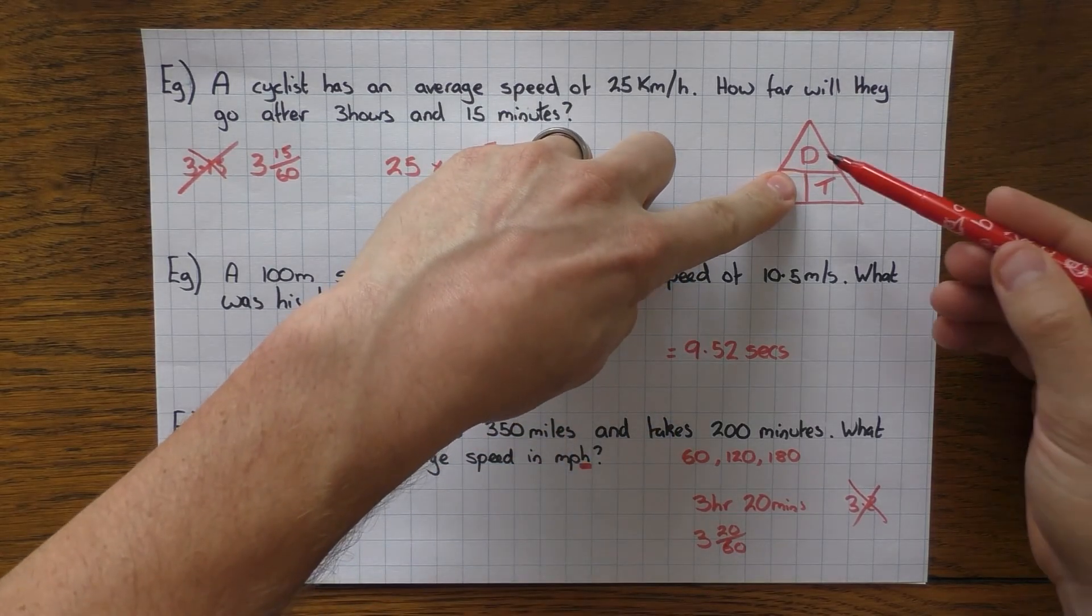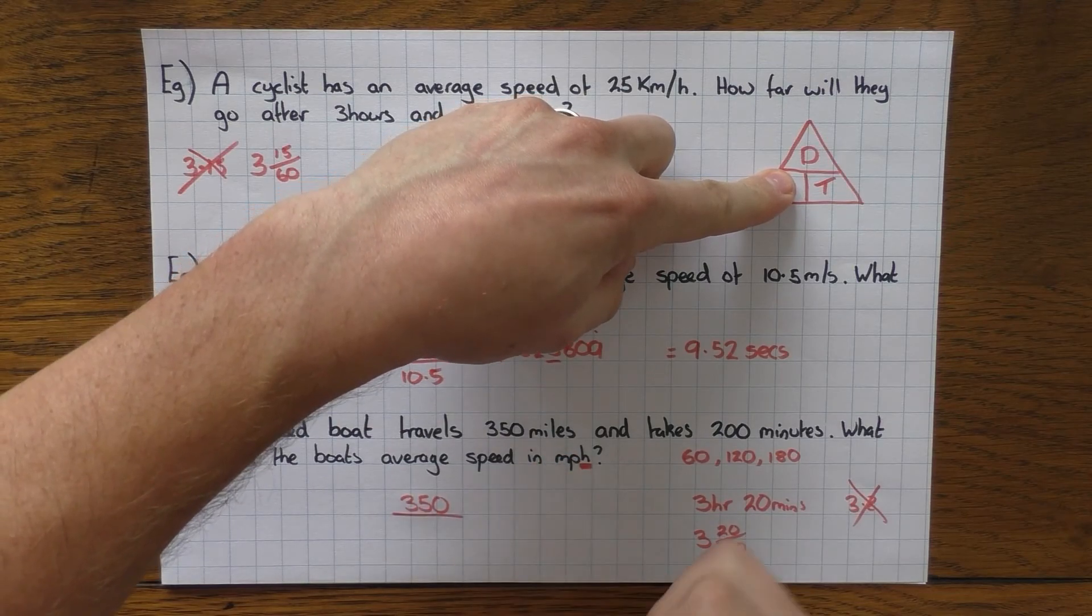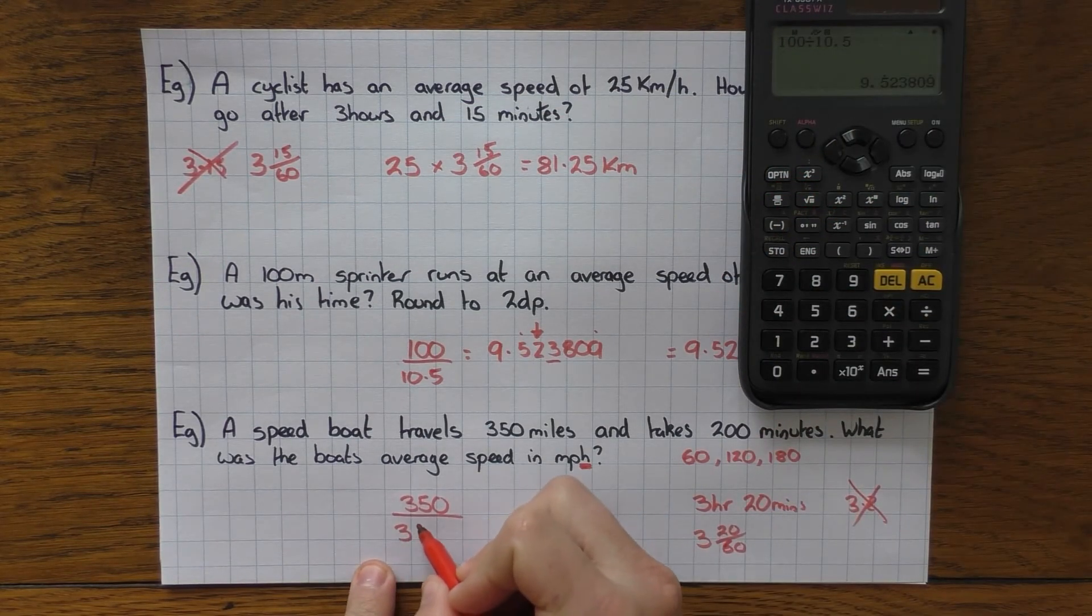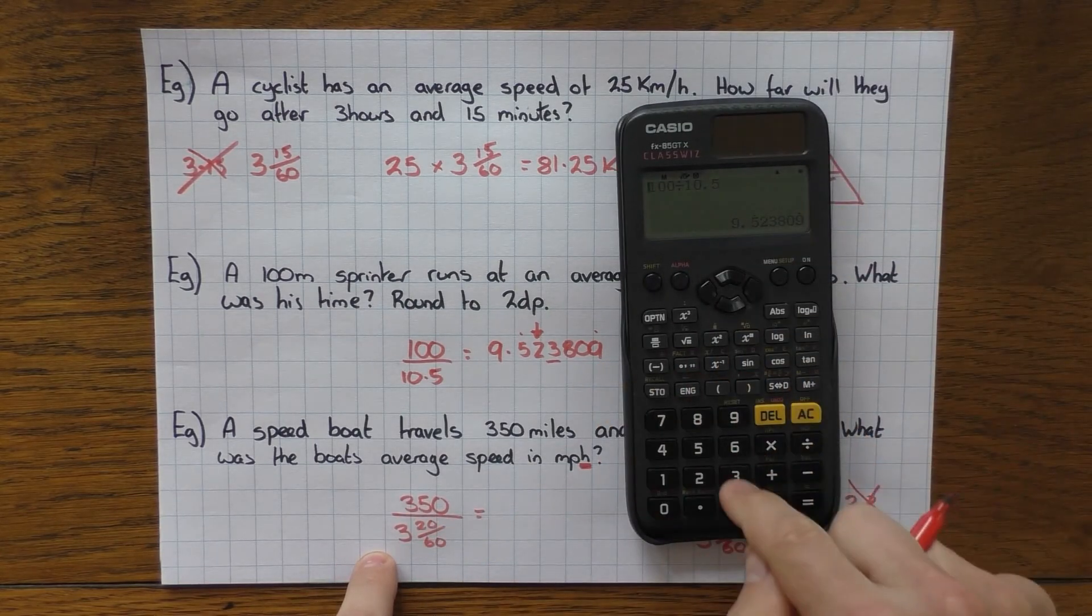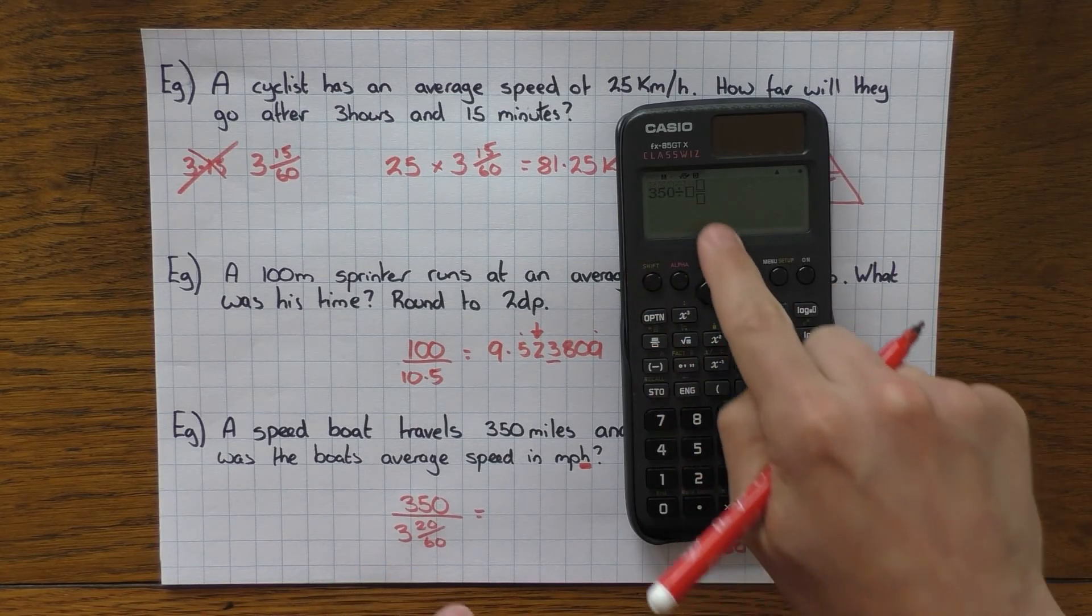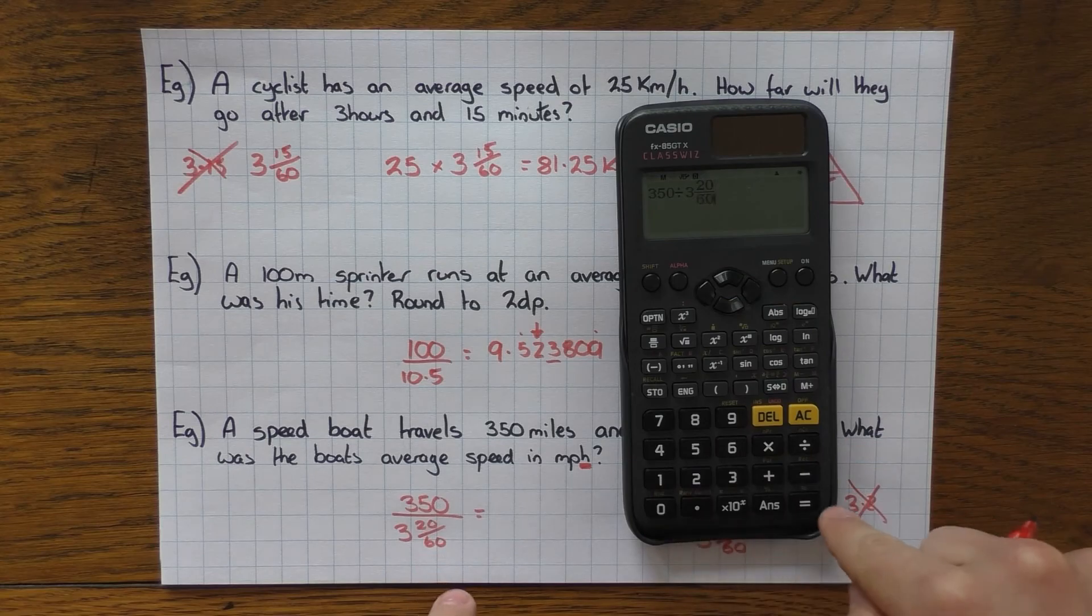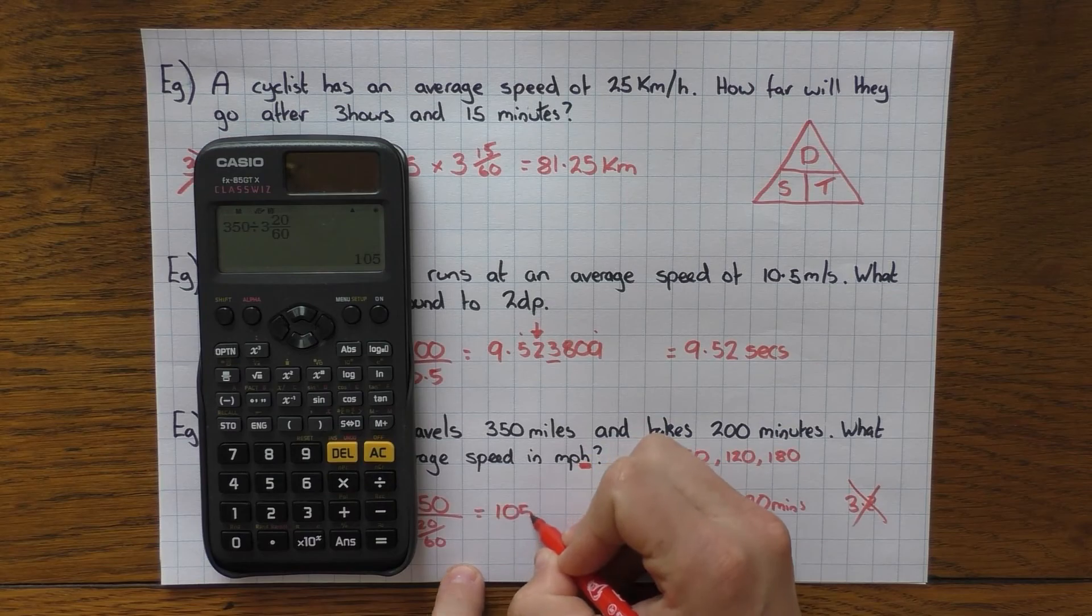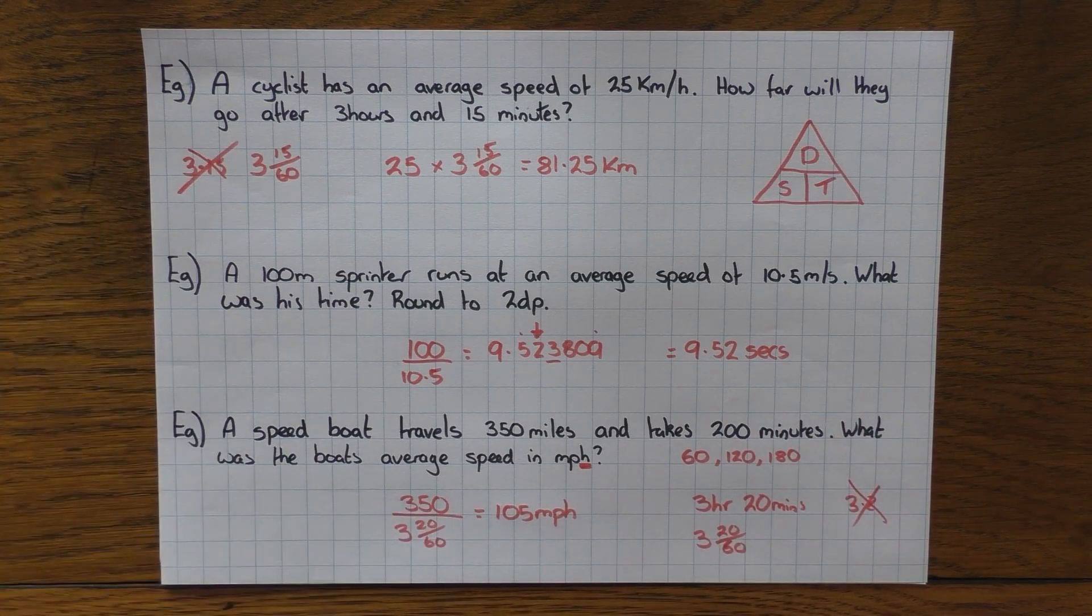We're after the speed. So I cover up S. So it's distance 350 miles divided by the time. We now have it in hours, which is good. So I now need to divide that by 3 and 20 over 60. And again, get the old calculator. 350 divided. Don't forget shift and the fraction button to get that mixed fraction coming up there. Three and then 20 over 60. There you go. Bang on 105. And if it was speed, well, it tells us that the unit's there. It's miles per hour.